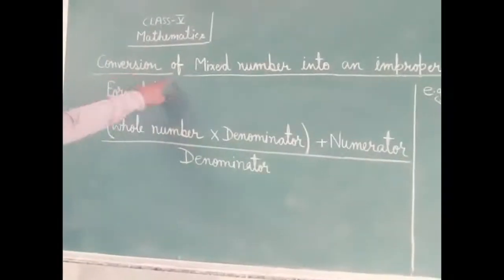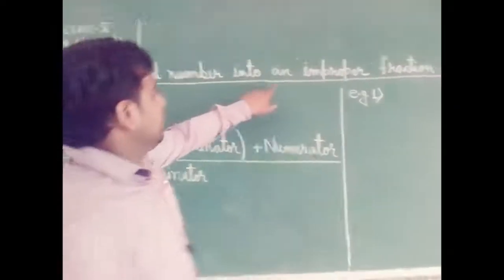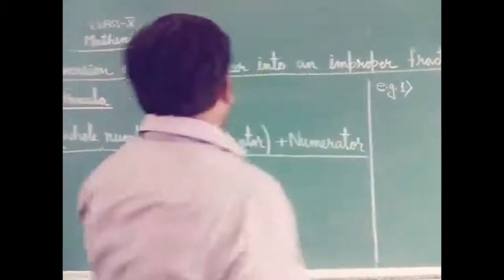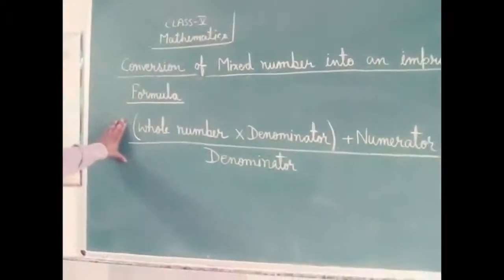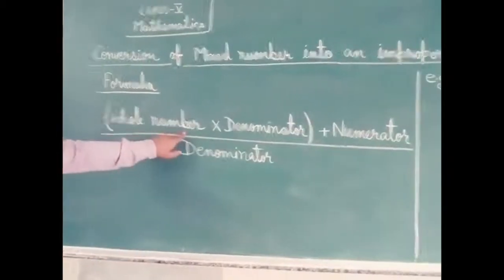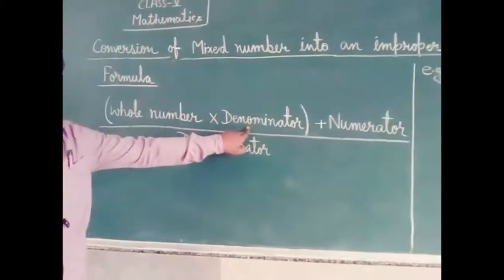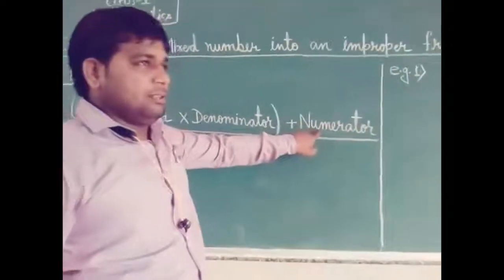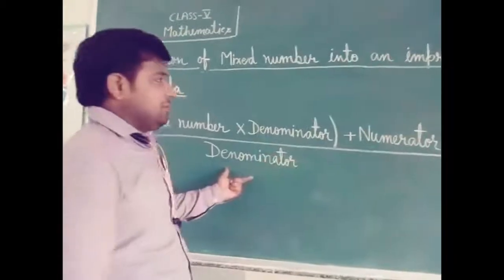This is the conversion of a mixed number into an improper fraction. We use this formula: whole number multiplied by denominator, plus numerator, and the whole is divided by the denominator.